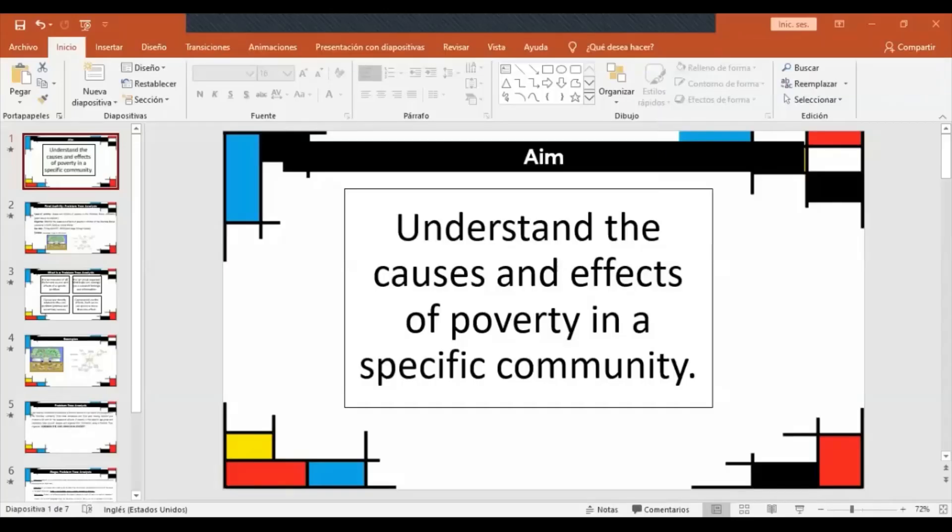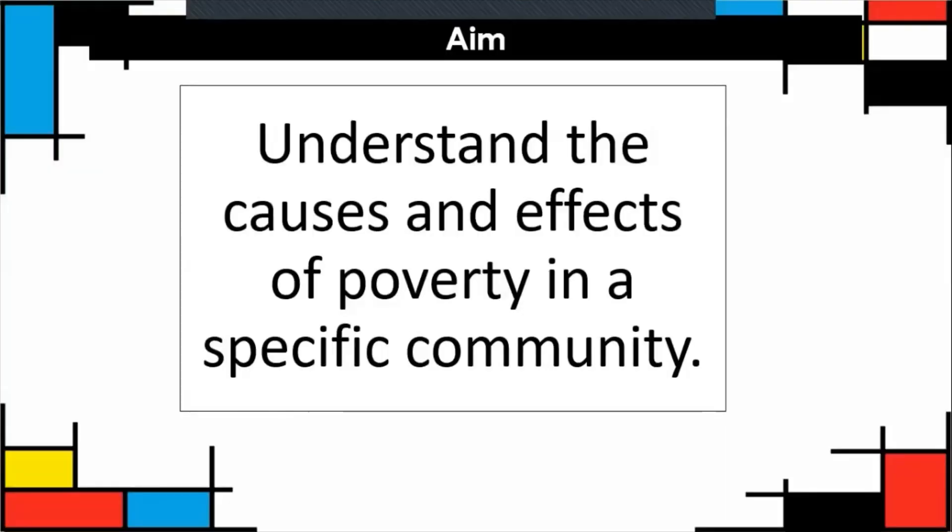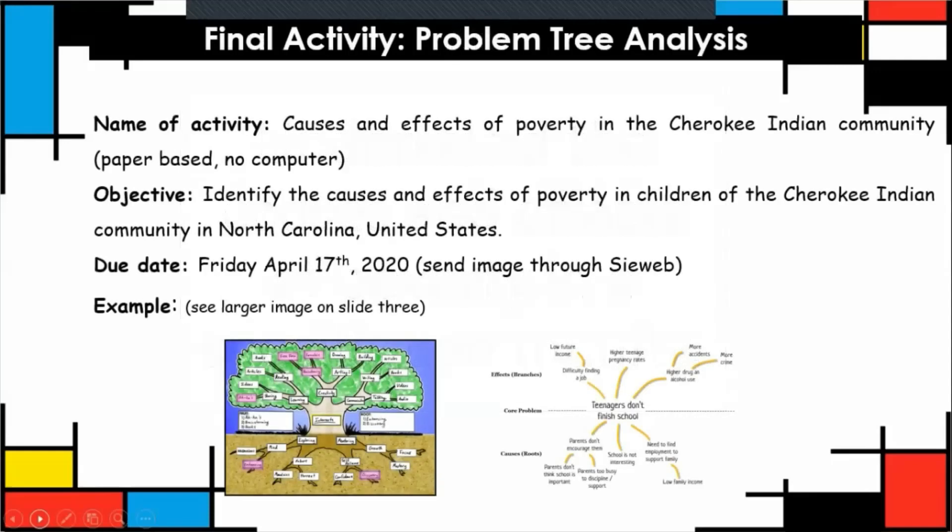Okay guys, I'm going to explain today's activity. The aim of this activity is to understand the causes and effects of poverty in a specific community. You're going to do a problem tree analysis. You're going to do this on paper, no computer. Here's the objective you can read at home. This is due Friday, April 17th, and you're going to send the image through Seesaw.